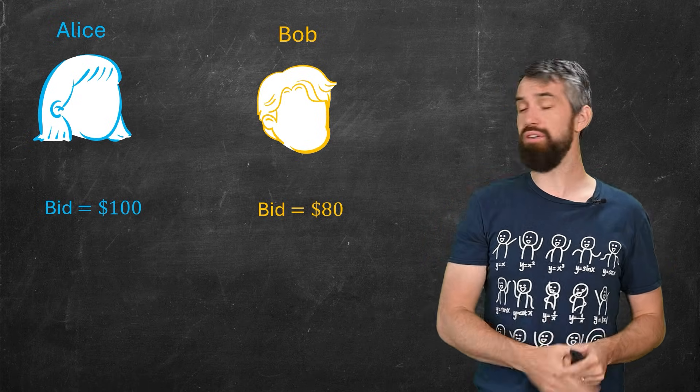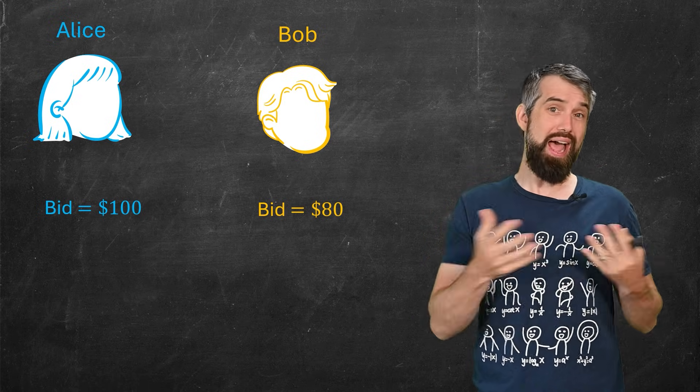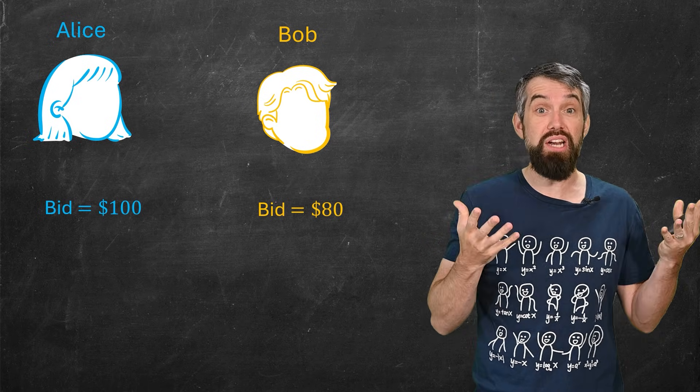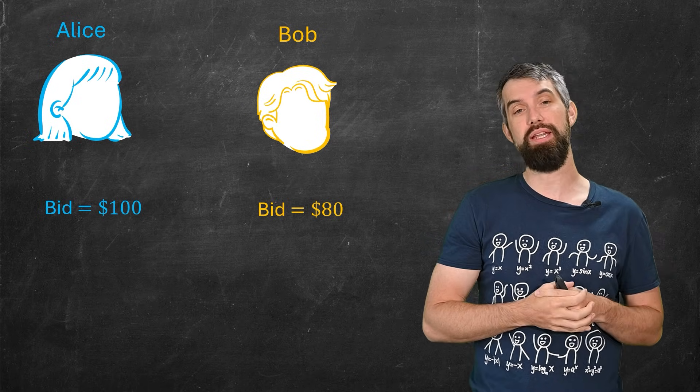Let's do the simplest case first. Let's imagine two advertisers, Alice and Bob. And Alice is going to bid $100, and Bob is going to bid $80 for an item or for an ad slot on a web page.